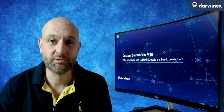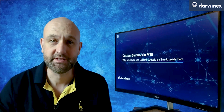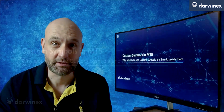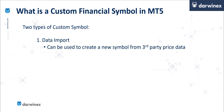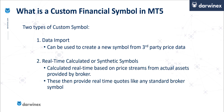Today I'll be talking about custom symbols, which are a really powerful addition to the MetaTrader platform. There are two types, and these are quite different from each other. The first allows you to import third-party data into the custom symbol, and the second is called a calculated or synthetic custom symbol. With this second option, you don't need to import any data at all — all of the data is calculated real-time based on the price streams of other assets provided by your broker, and once set up, they'll create quotes just like any other symbol.